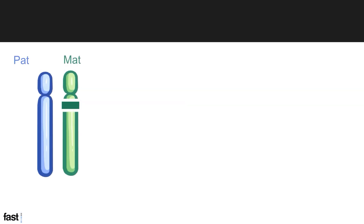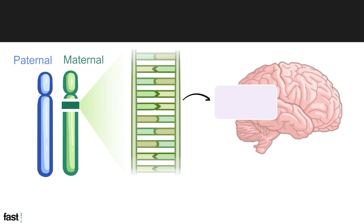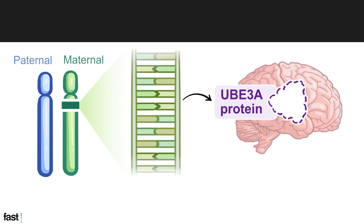Everyone inherits their chromosomes from their parents. The chromosomes carry genes, which are coding instructions for making proteins. An important example of this is the UBE3A protein, which is made from the UBE3A gene located on chromosome 15.